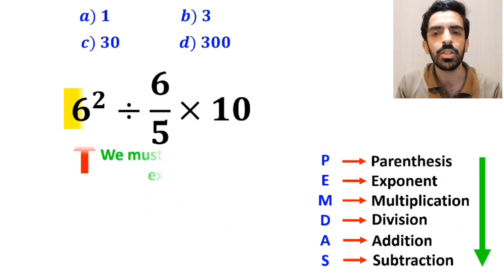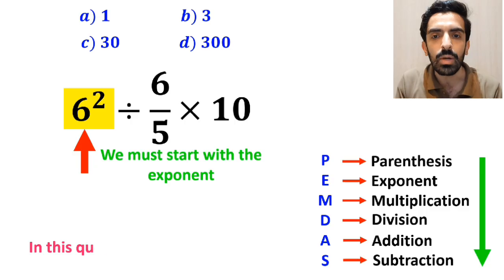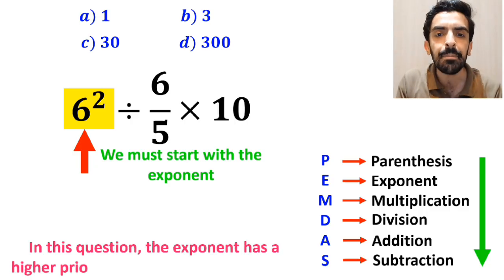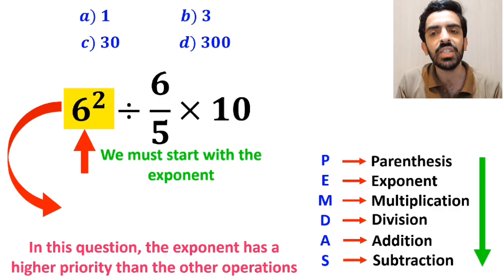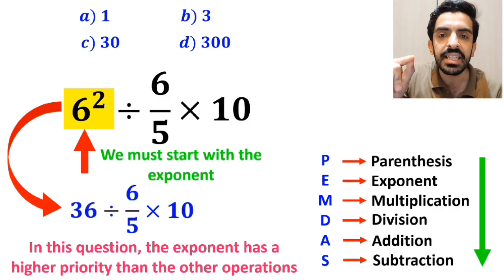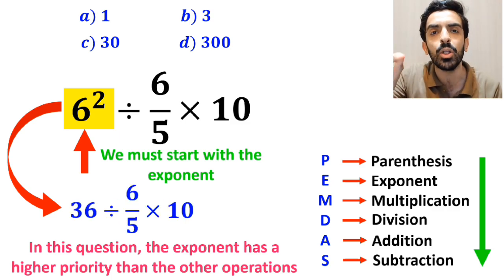Okay, first we must start with the exponent, because in this question, exponent has a higher priority than the other operations. So, instead of this expression, we can write 36 divided by 6 over 5, then multiply by 10.